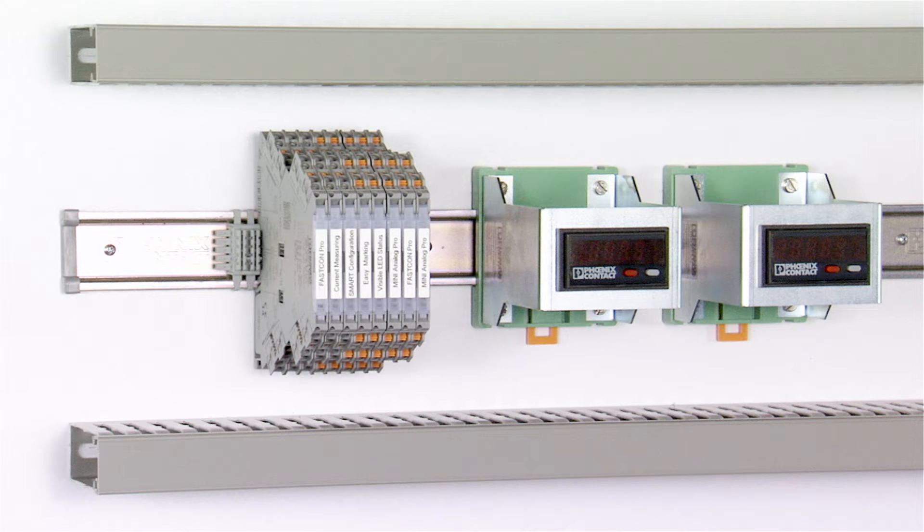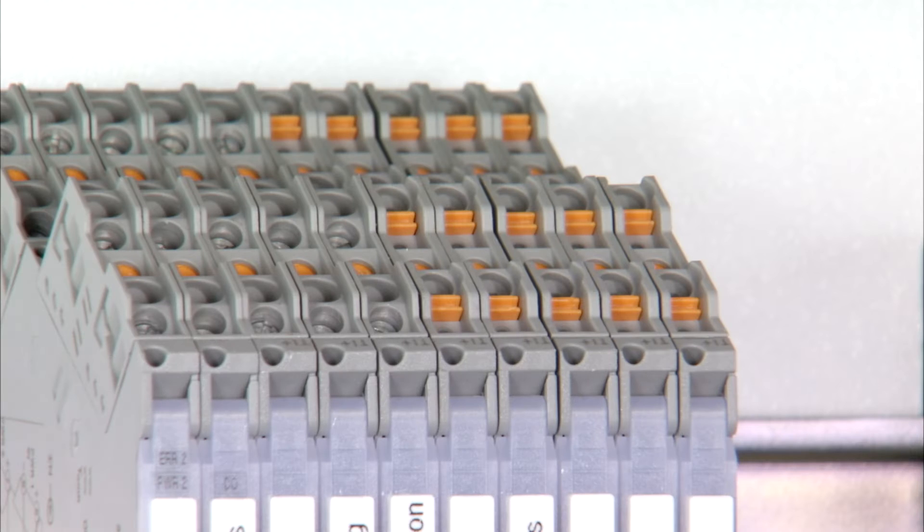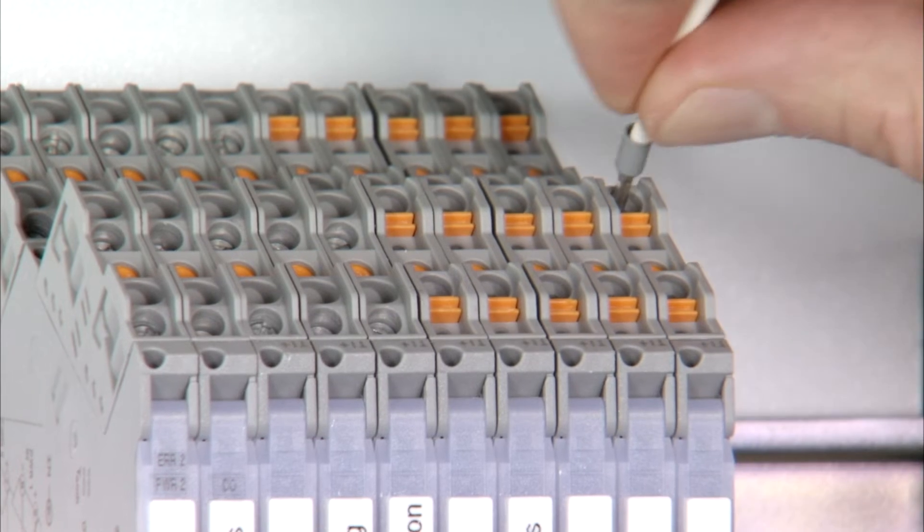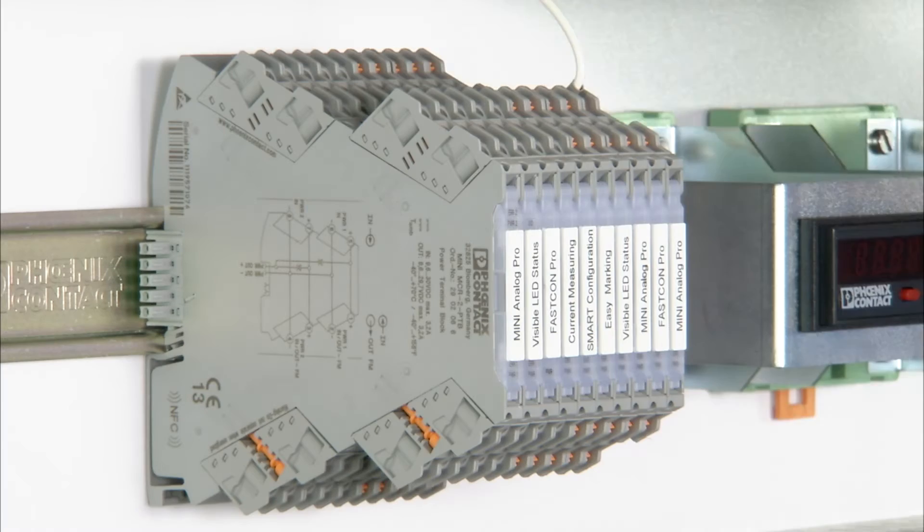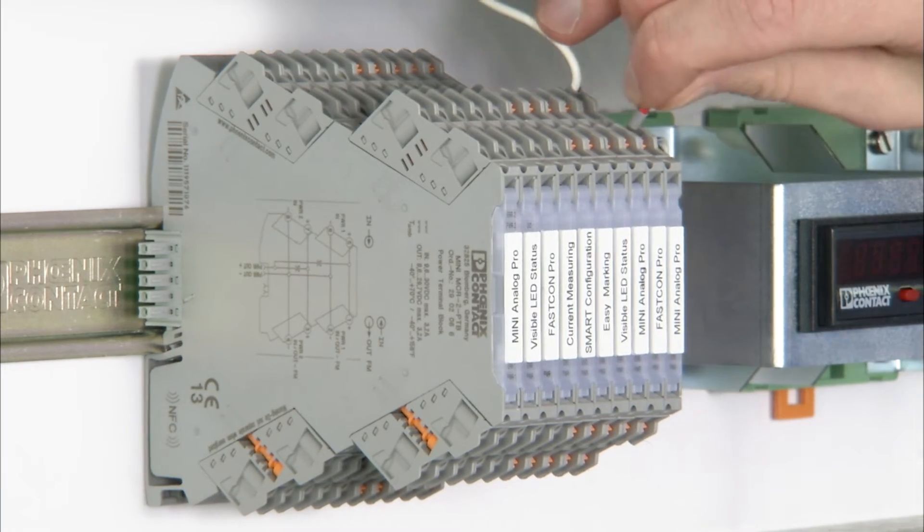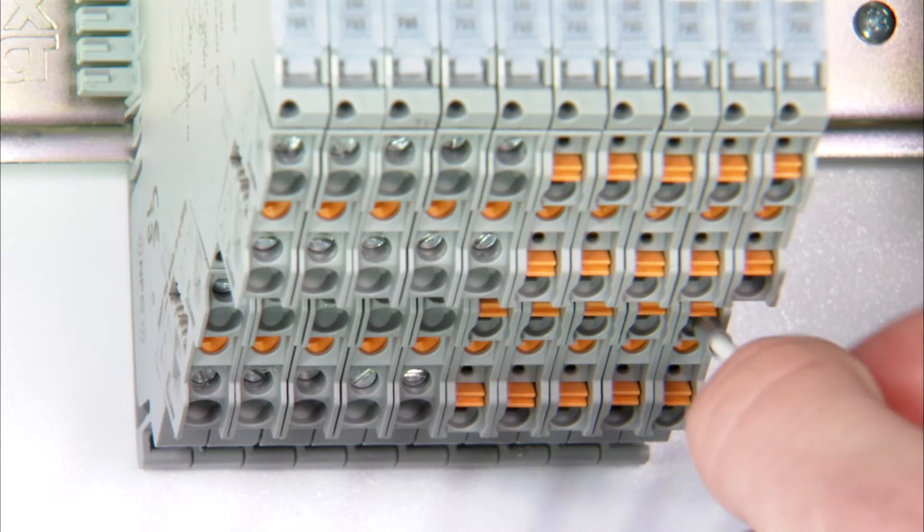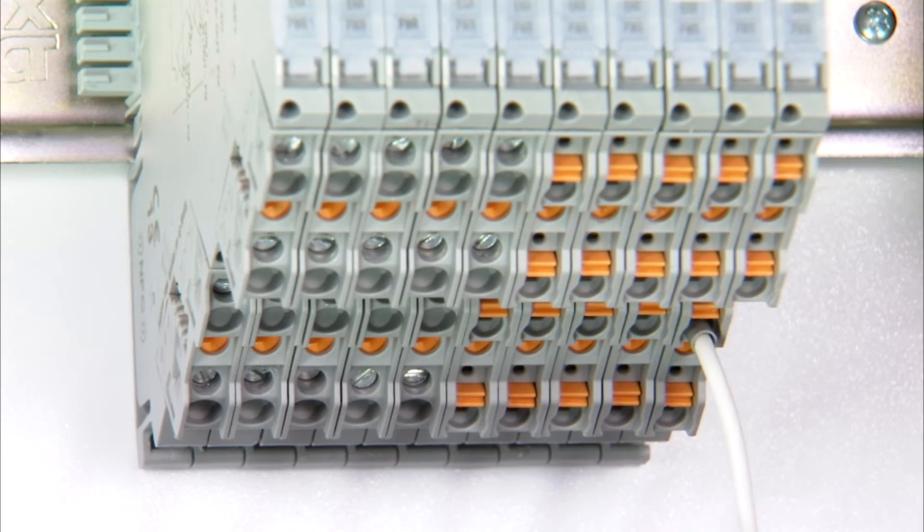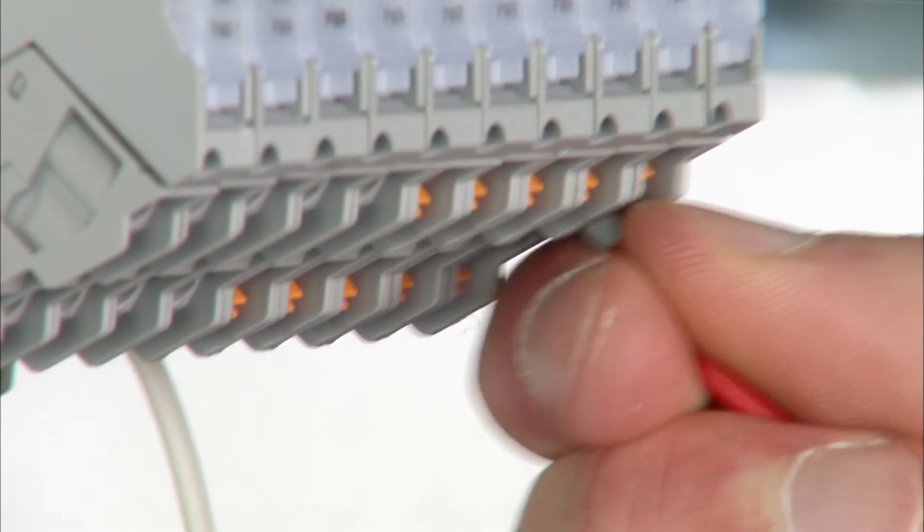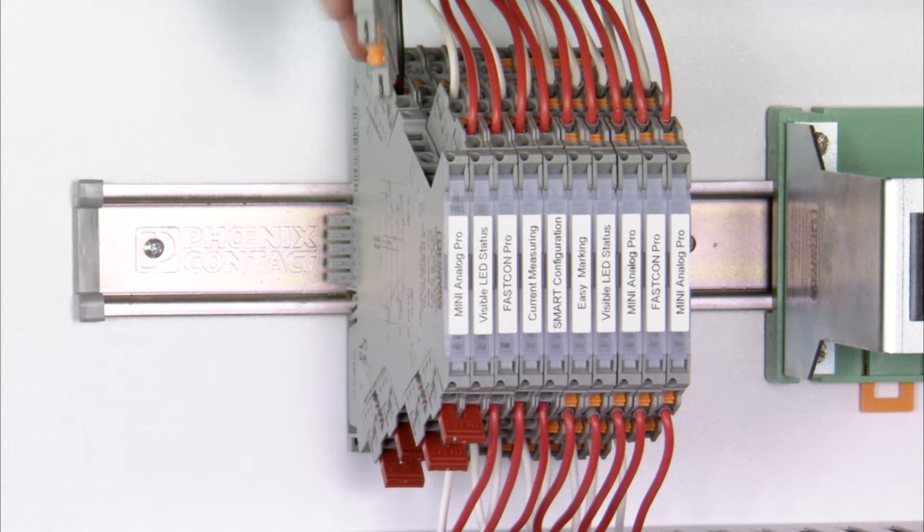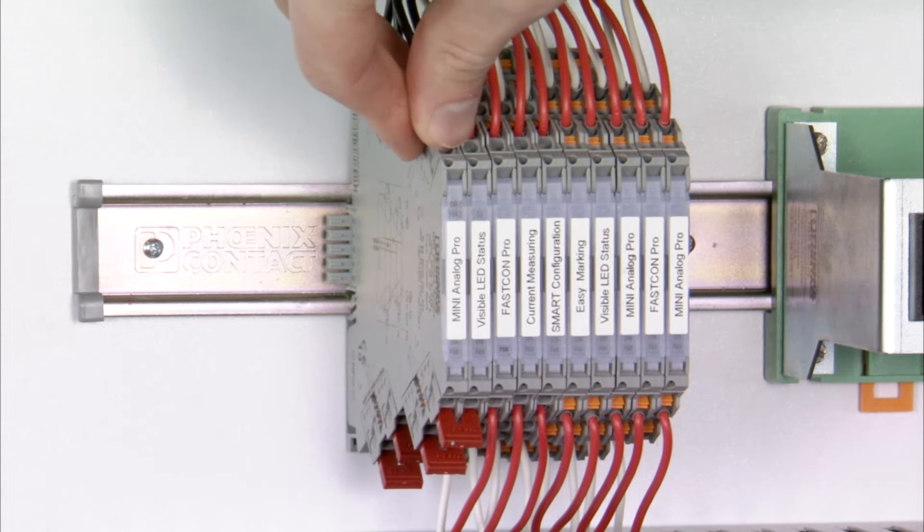The front alignment of the connections allows easily accessible wiring. The terminal points are visible from the front and can be wired in any order. The connection terminal blocks can be independently inserted and removed.